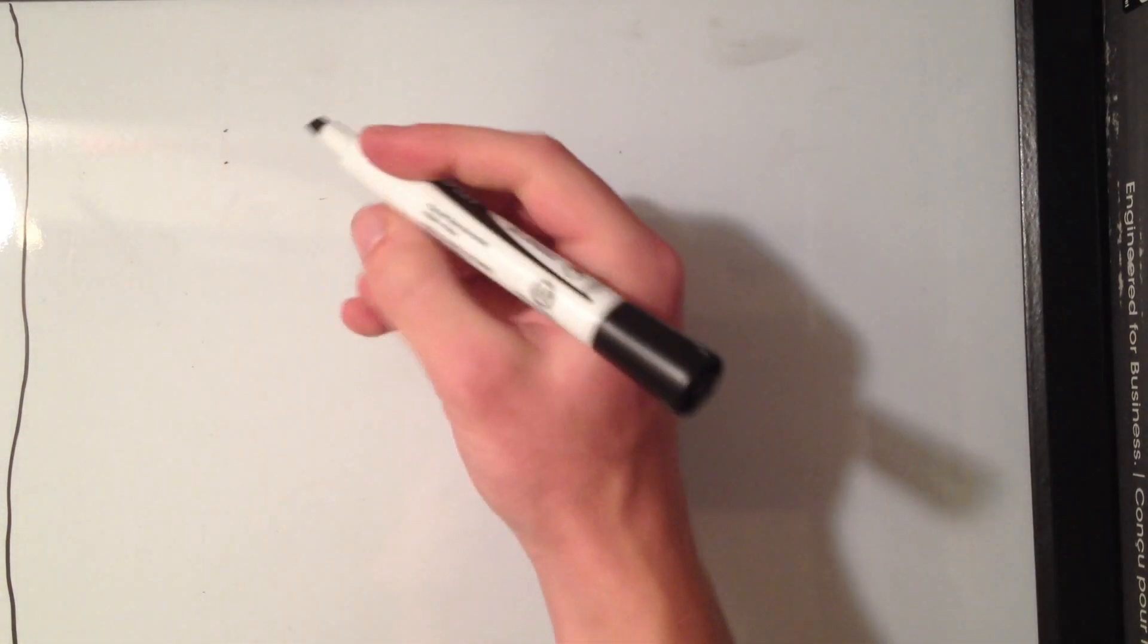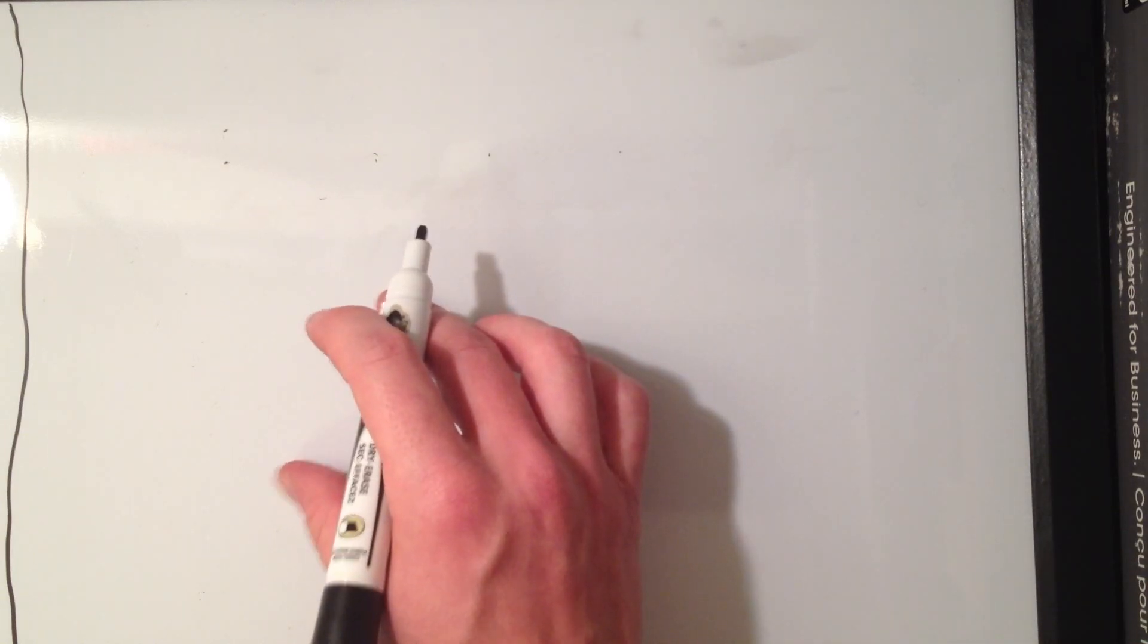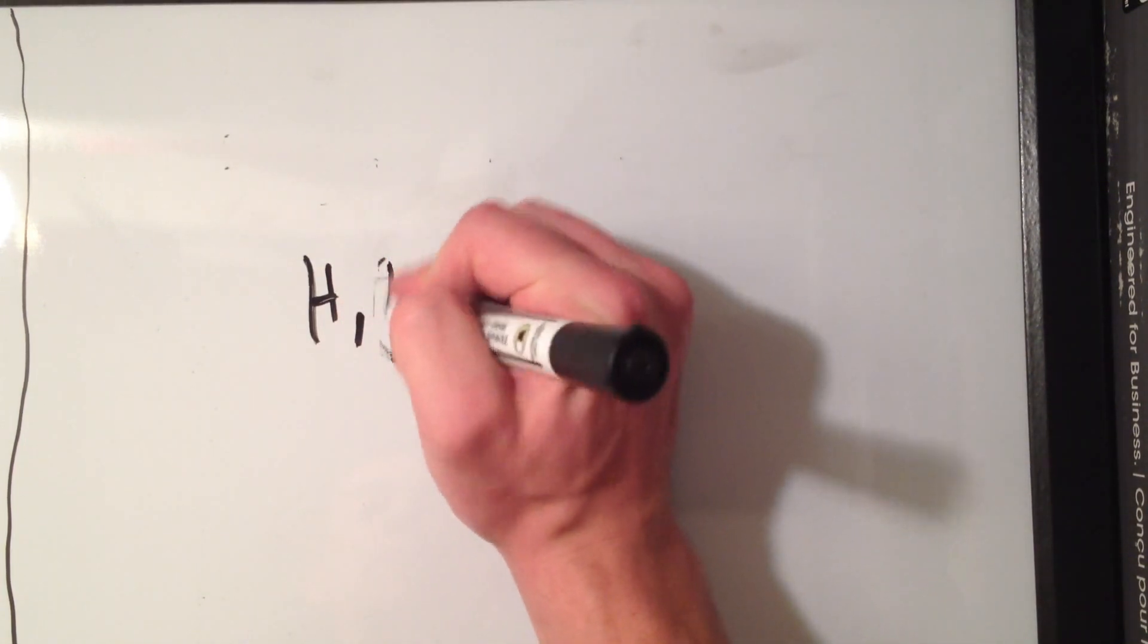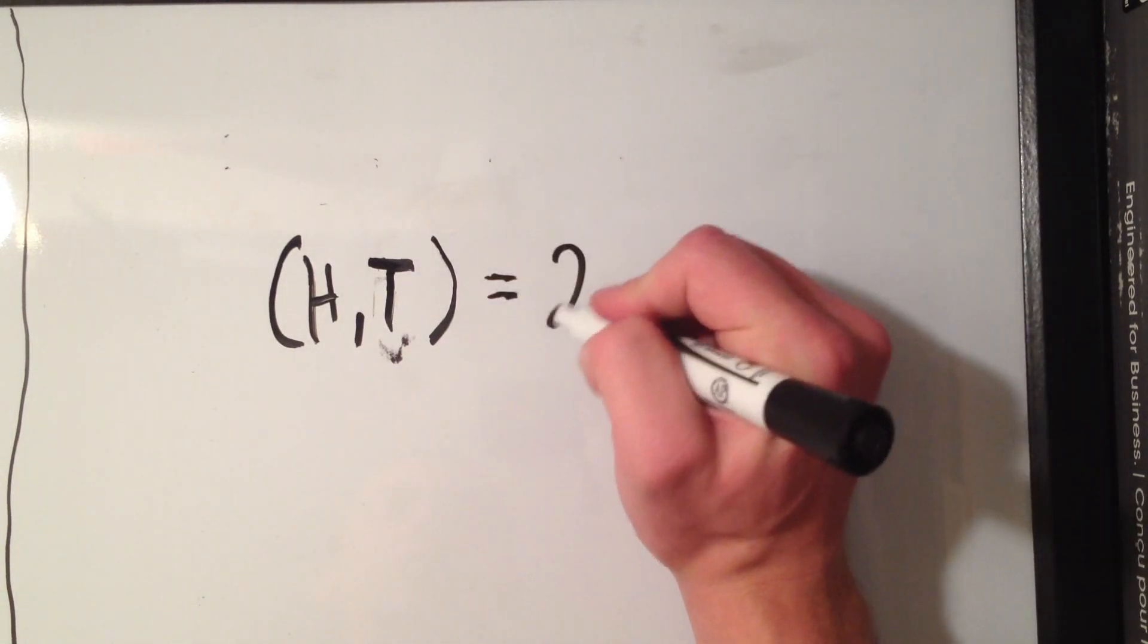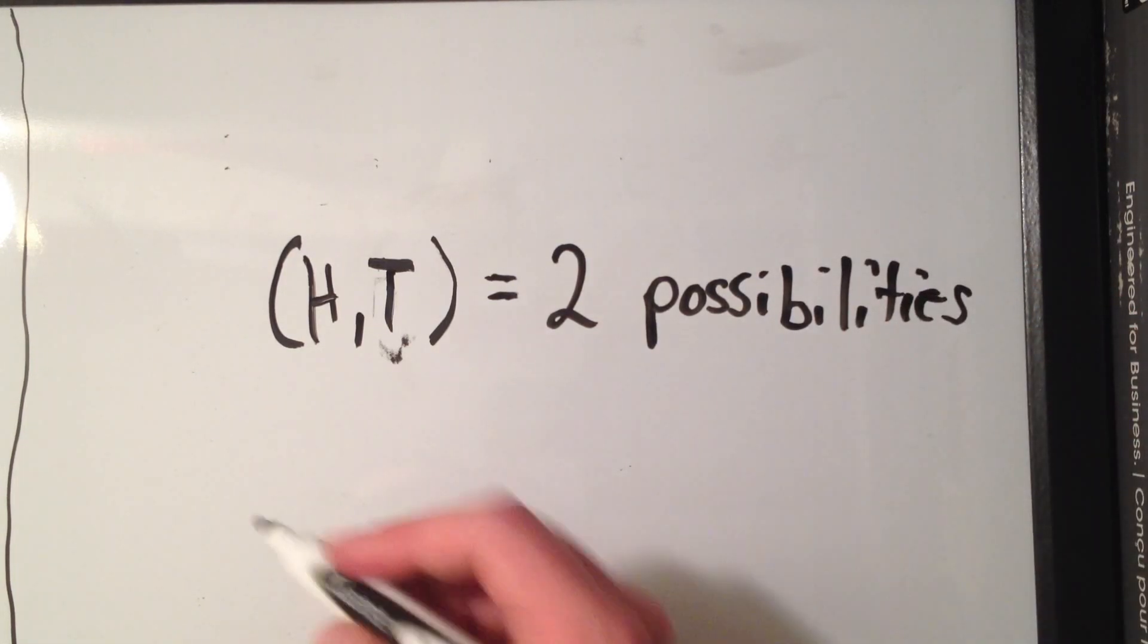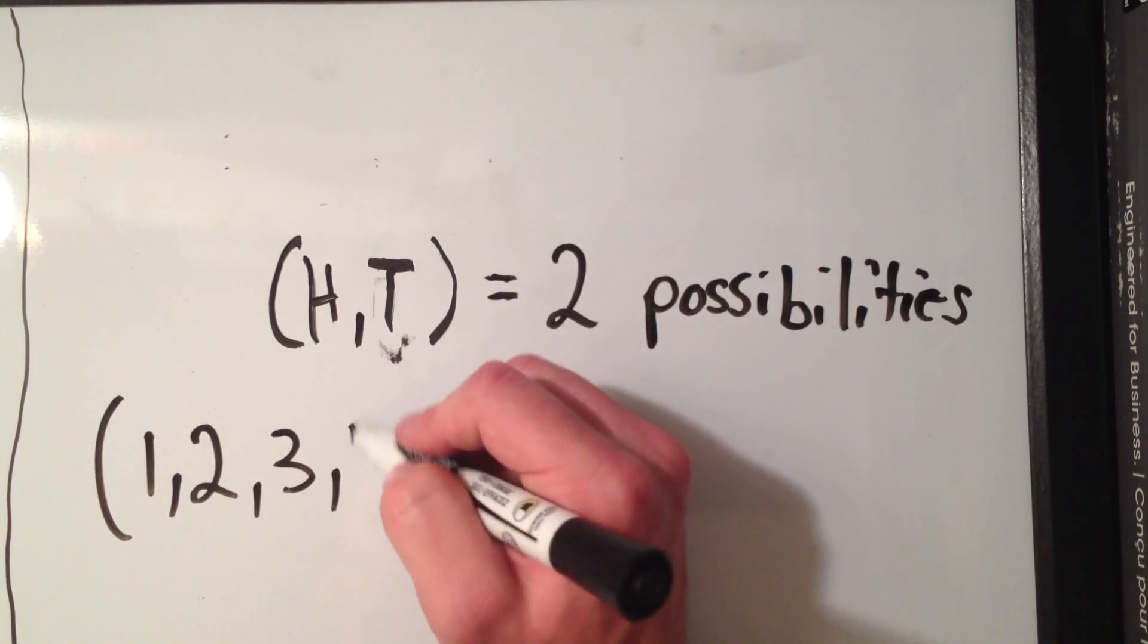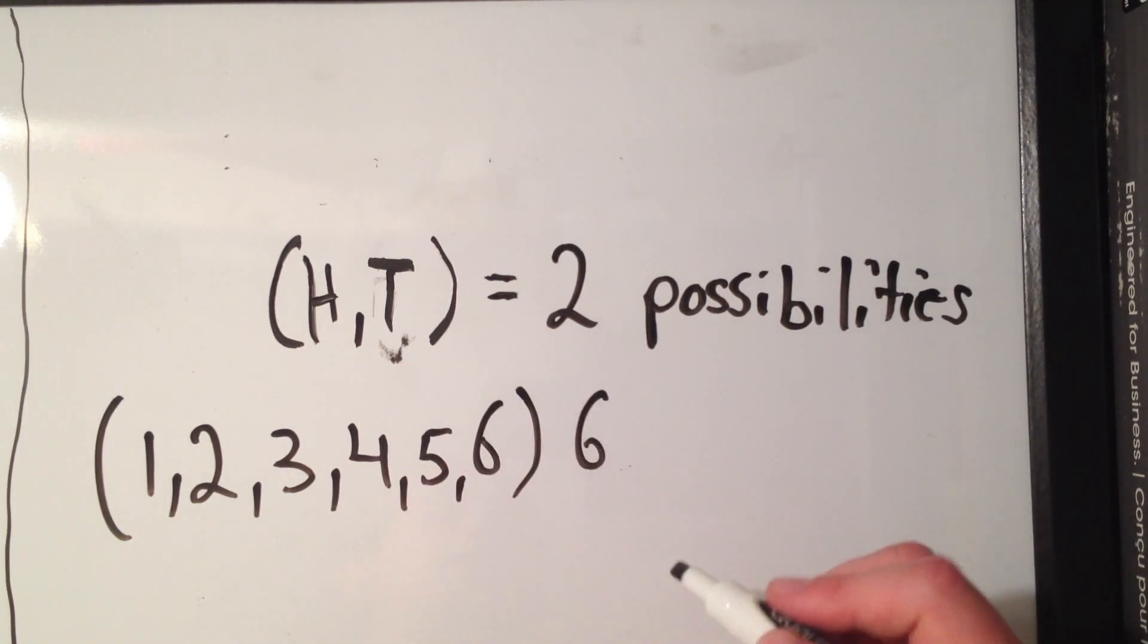We can just take the number of ways of the first event, so the number of ways that they can occur, namely a heads or tails, so that is two possibilities. And number of ways you can roll a six-sided die, namely one through six, and that would be six possibilities.